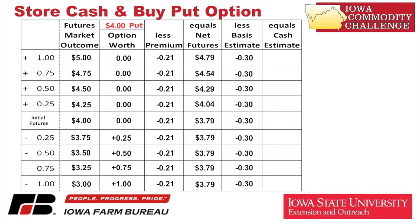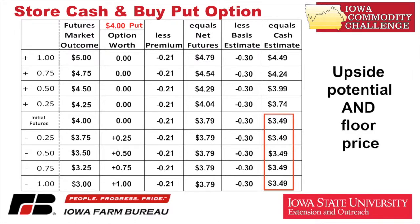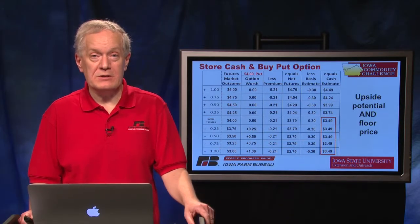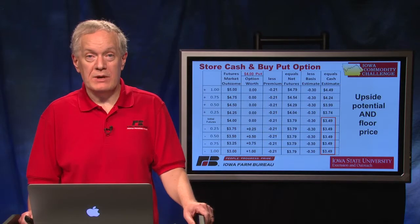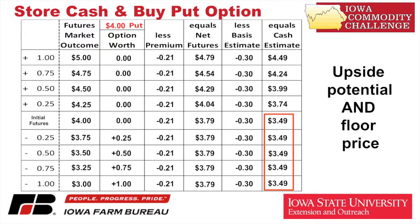With the basis estimate of 30 cents, you can see that I've got upside potential — if the futures market wants to go up to five dollars, I can get a better value for my cash commodity because the option just expires worthless. But down here you see that floor developing, at a price I calculated earlier. There's my price floor no matter where the market goes to the downside: $3.79 less 30 cents gives a $3.49 minimum price, regardless of the futures price outcome. That may cover all of my variable costs, contribute toward fixed costs, and does a good job of managing my risk.